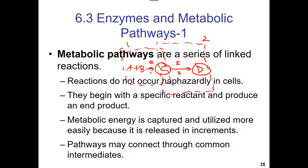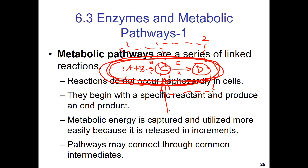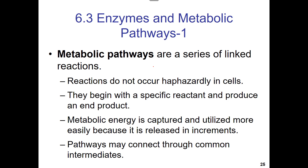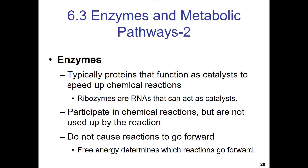D is the final product of the overall pathway. C, in the context of the overall pathway, is called the intermediate — because it's in the middle. Metabolic pathways are basically linked reactions.